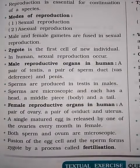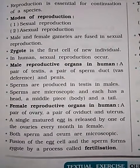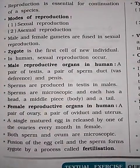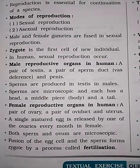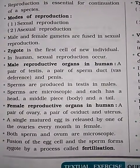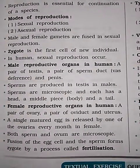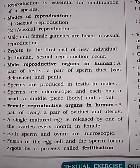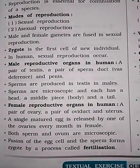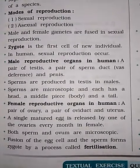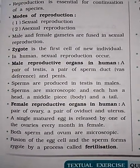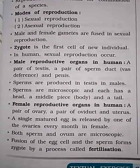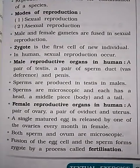Female reproductive organs in humans: a pair of ovaries, a pair of oviducts, and uterus. A single matured egg is released by one of the ovaries every month in females.